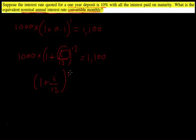I'll just keep writing down a lot of steps. 1 plus i/12 to the 12th equals 1100 over 1000, that equals 1.1. Then we're going to get rid of this to the power of 12.